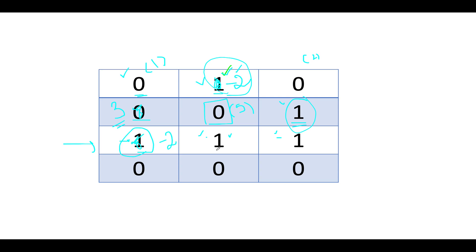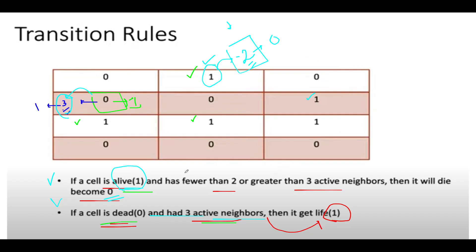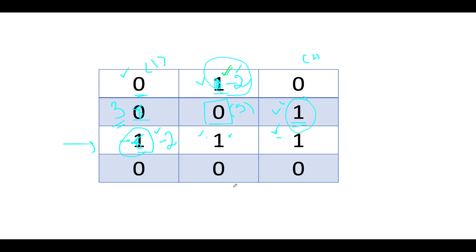Continuing, the next cell is one. Counting active neighbors: one, two, three. So it has three active neighbors. Therefore, the state will remain as it is because it is not having greater than three or fewer than two active neighbors — it's a happy state.